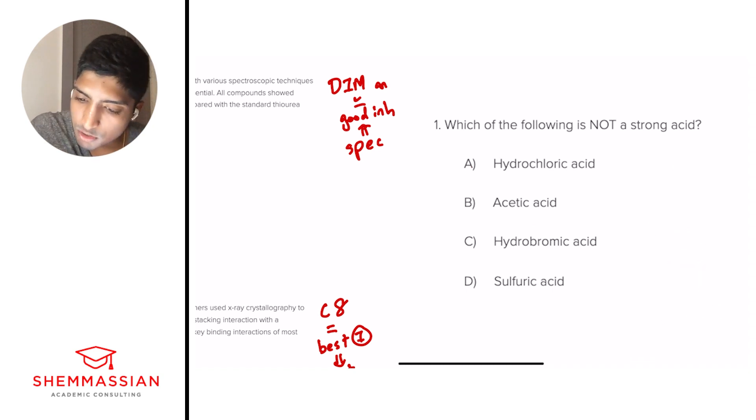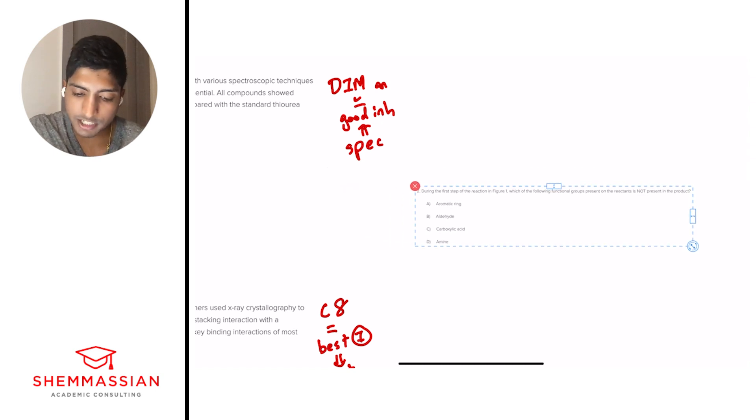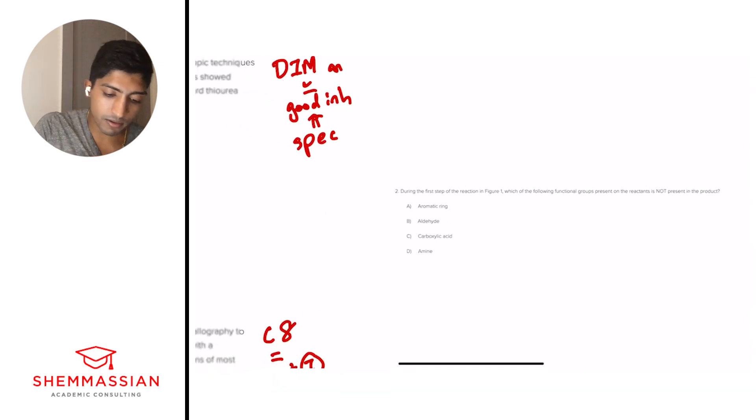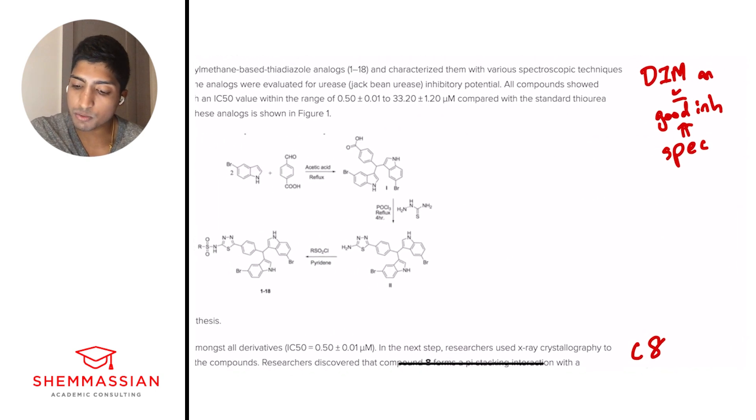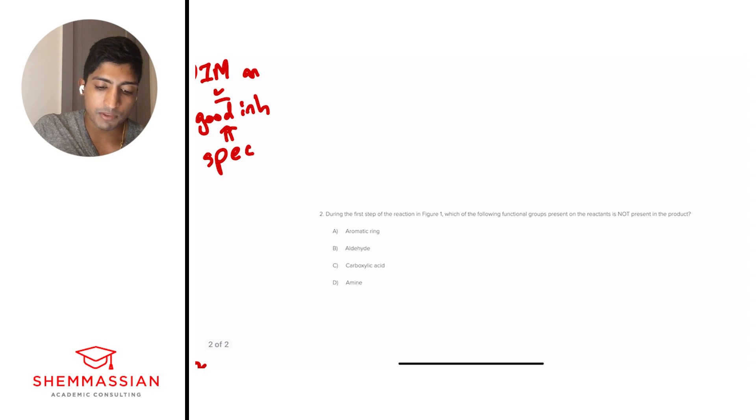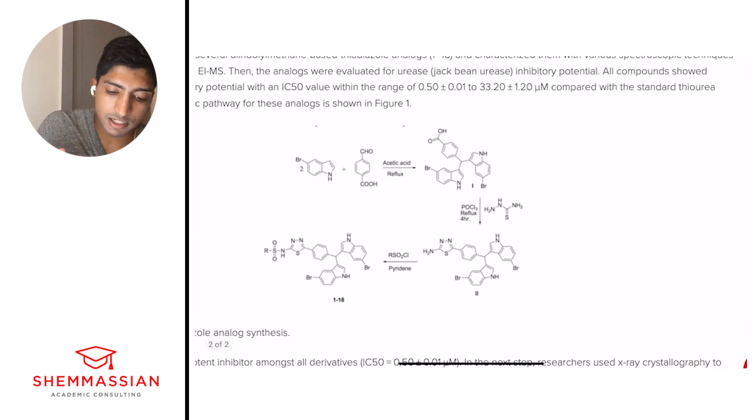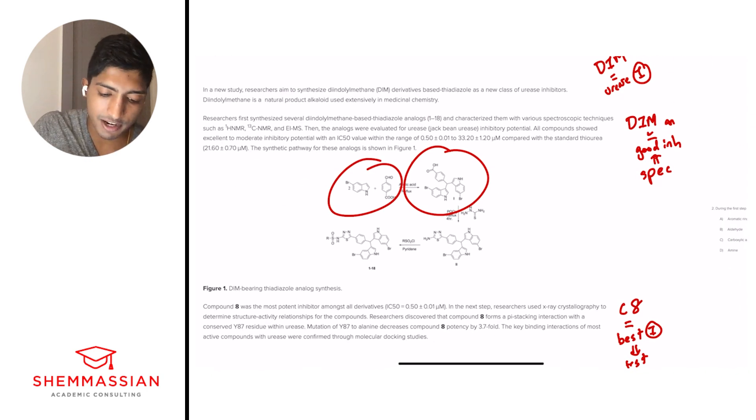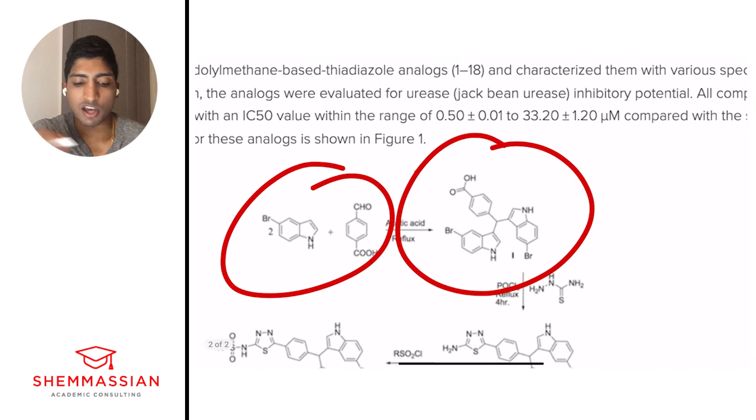Let's go to question two. During the first step of the reaction in figure one, which of the following functional groups present on the reactants is not present in the product? Is it A, an aromatic ring? Is it B, an aldehyde? Is it C, a carboxylic acid? Or is it D, an amine? This is a question that requires us to go back to our figure. And we're looking at a reaction between the reactants and the product. We have these reactants and this product. And we're looking at what doesn't match.